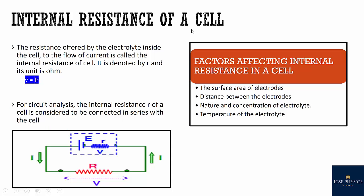What is internal resistance? The resistance offered by the electrolyte inside the cell to the flow of current is called the internal resistance of a cell. It is denoted by small r, and its unit is ohm. There is some energy lost inside the cell, and that energy loss is due to this internal resistance. Internal resistance is always in series.